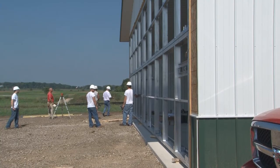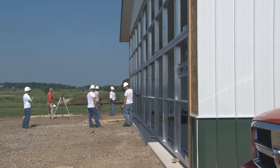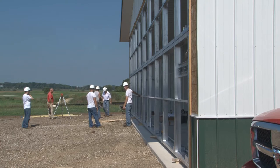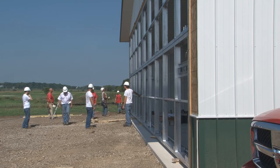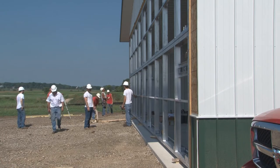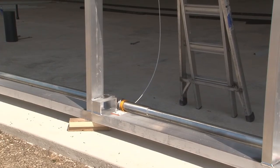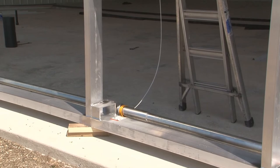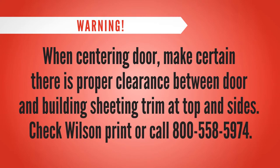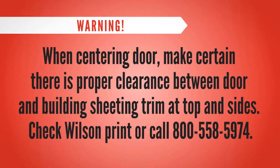Determine how much, if any, the door is racked by viewing the door at the edge with track. Keep top of door centered by pulling one way or the other. Remember: the door is stacked on the wood blocks at the bottom and will straighten itself somewhat once hanging from the top hinges. Warning: when centering door, make certain there is proper clearance between door and building sheeting trim at top and sides. Check Wilson Print or call 800-558-5974.